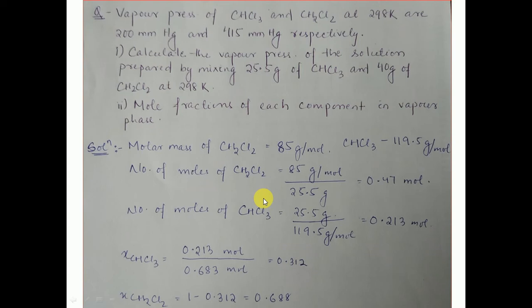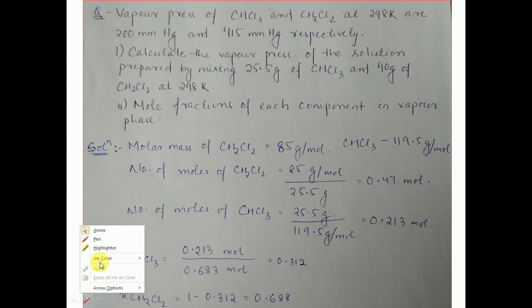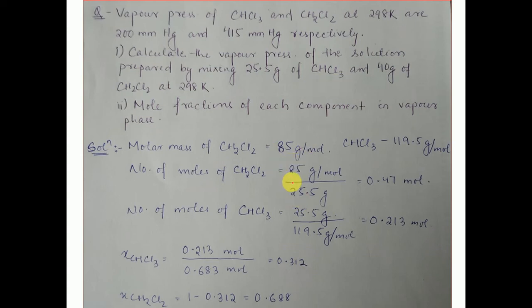Now the question includes two components, CHCl3 and CH2Cl2 at a certain temperature, with vapor pressures 200 and 415 mmHg respectively. We will calculate the vapor pressure of the solution when we mix 25.5 grams of CHCl3 and 40 grams of CH2Cl2. First, I will find the molar masses because we have to calculate the mole fraction. The number of moles equals given weight divided by molar mass. For CH2Cl2: 40 grams divided by 85 gives the moles.